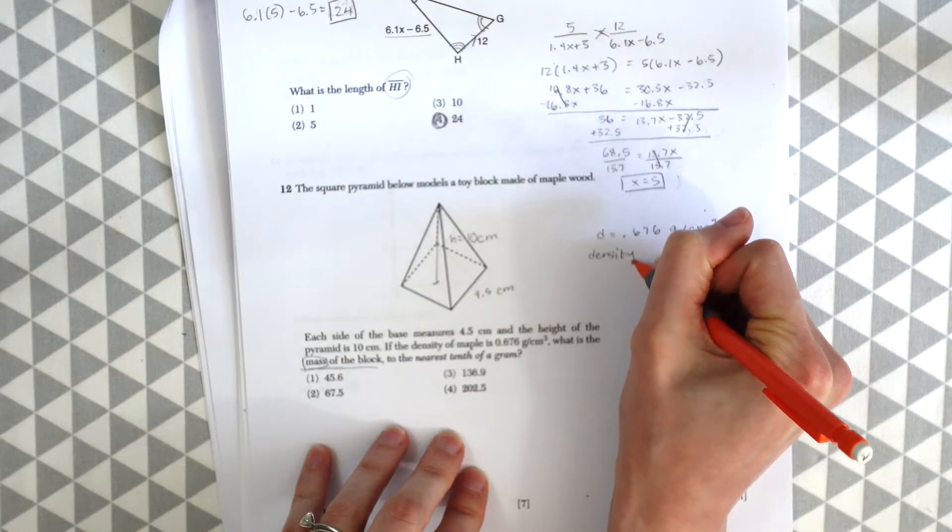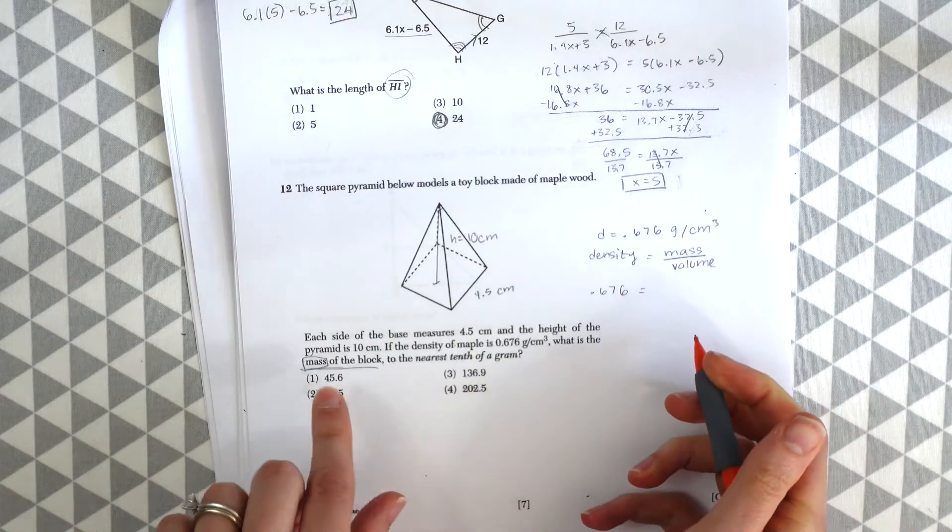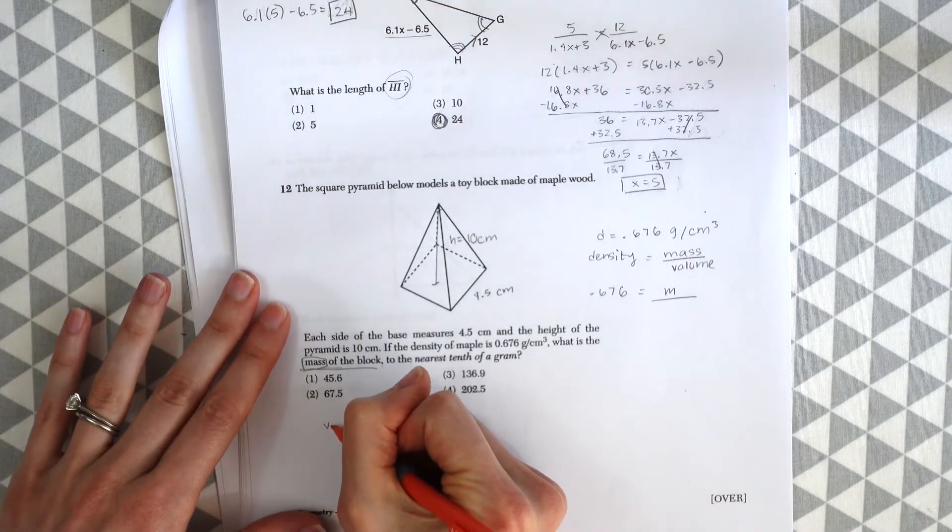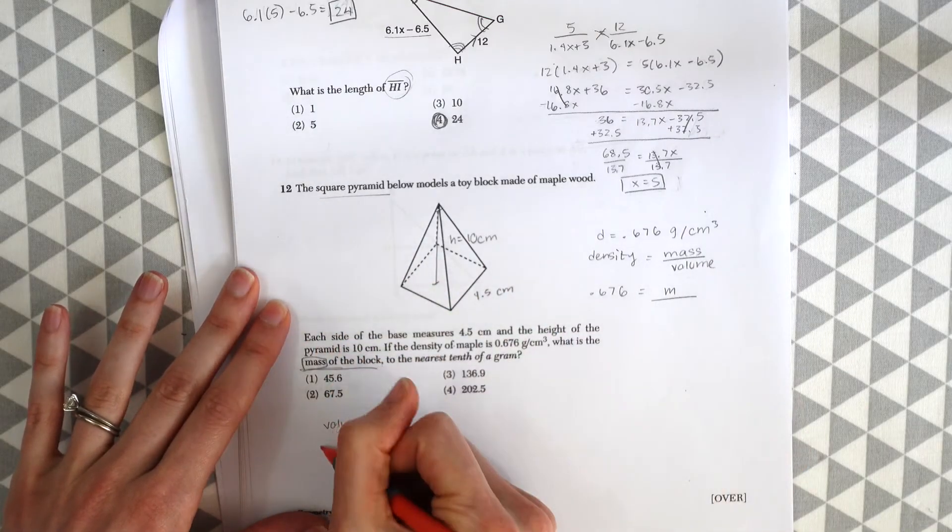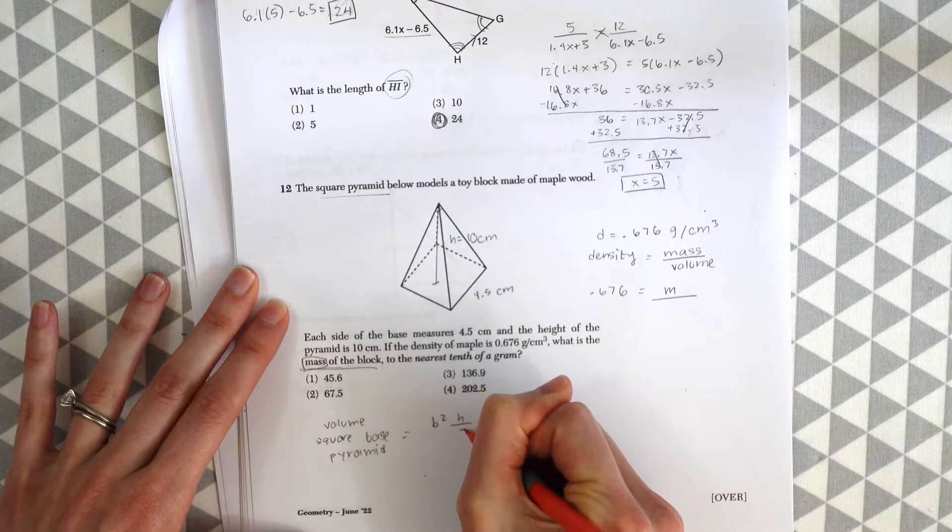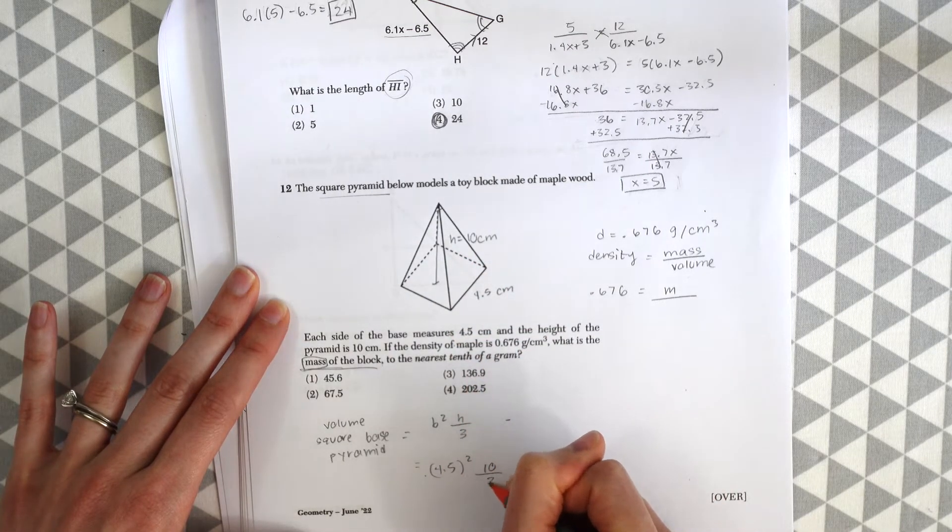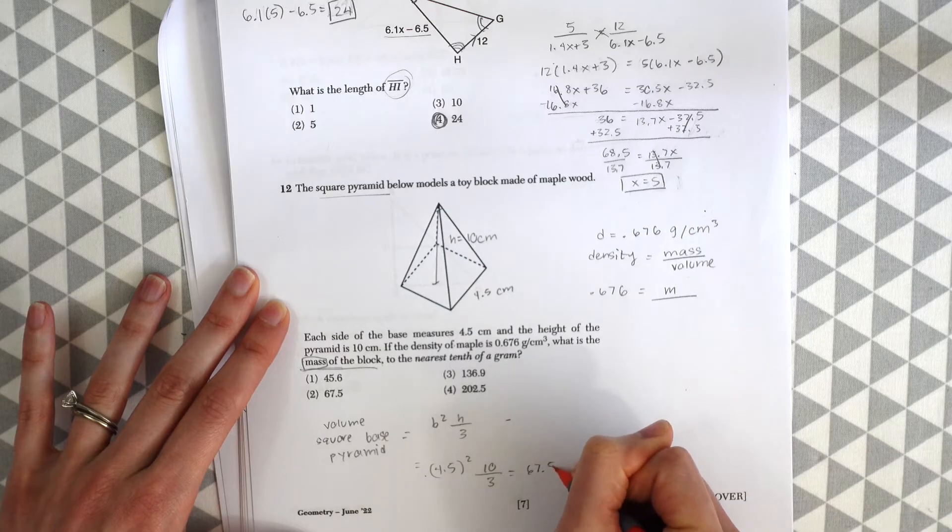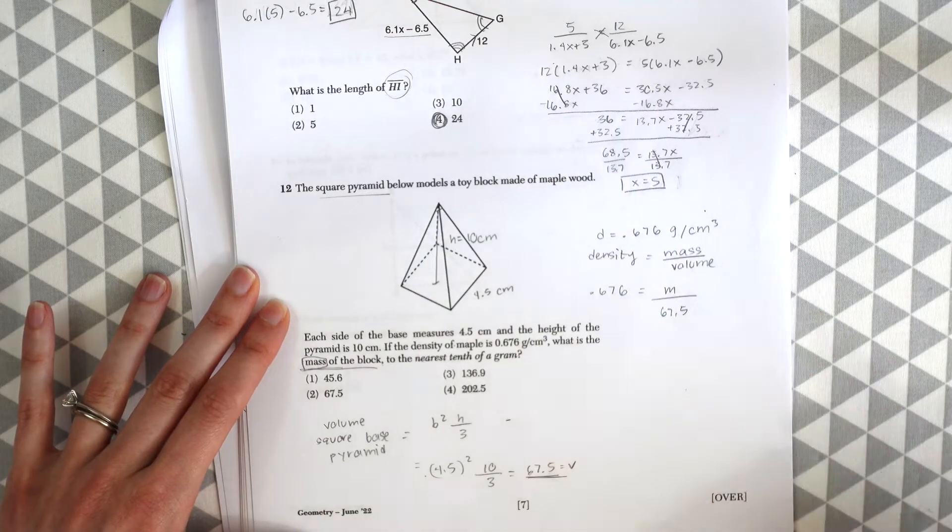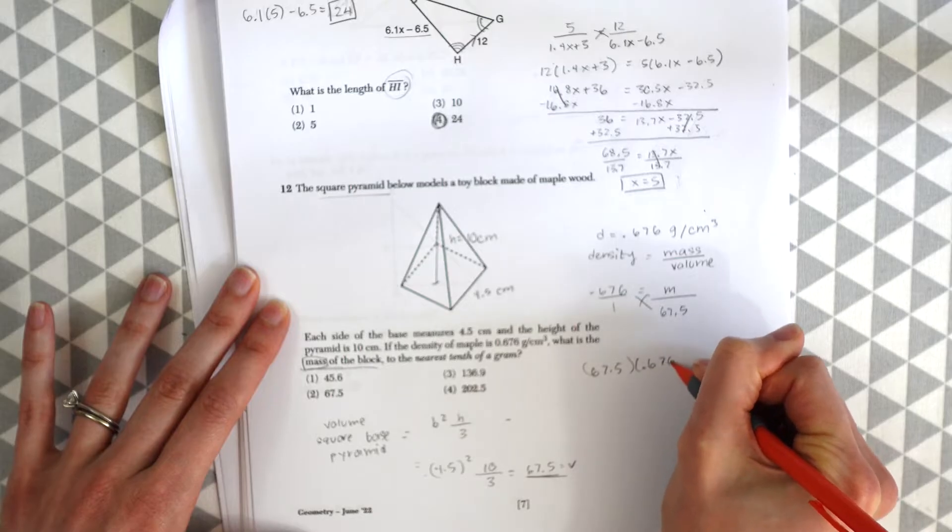So the density formula is mass over volume. So we know that the density is 0.676, and they want to know what the mass is, m, over volume. So we can find volume. The volume of this square base pyramid is just b squared times h over 3, where b is the base, which in this case is 4.5 squared times the height, which is 10, over 3. So just plug that into your calculator, and you'll get 67.5. So this is the volume. So we can actually plug this into our density formula over here. And then we can cross multiply again to find m. So we could just do 67.5 times the density that they gave us. And this will be equal to the mass.